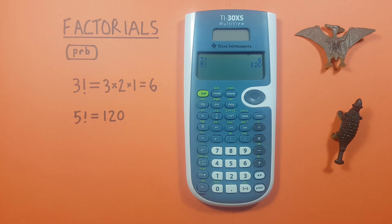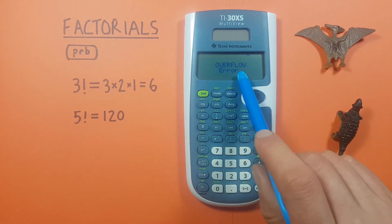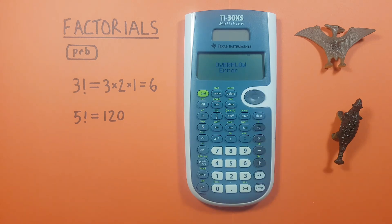But what if you want to find the factorial of a big number like let's say 100. If you enter 100 factorial you'll get this overflow error. That's because the resulting number is too big for this calculator to handle.